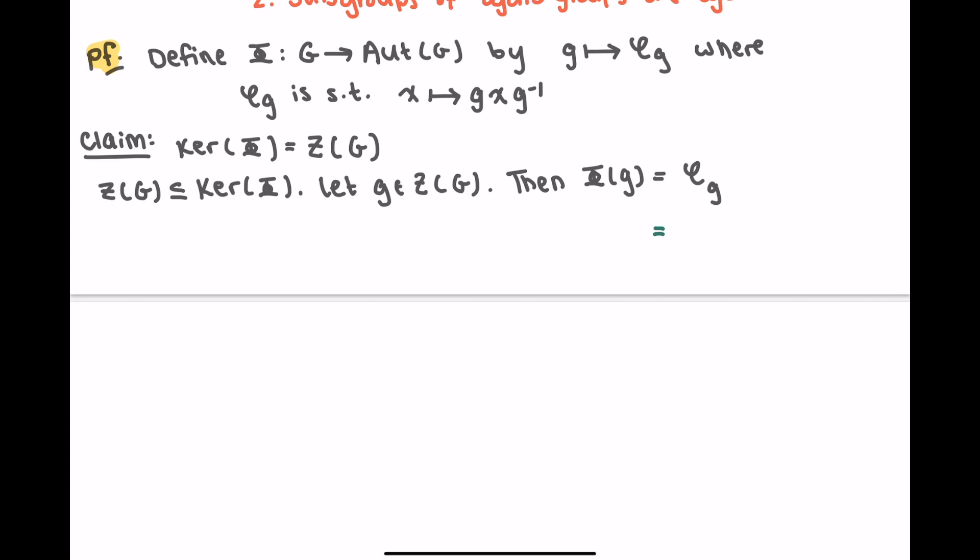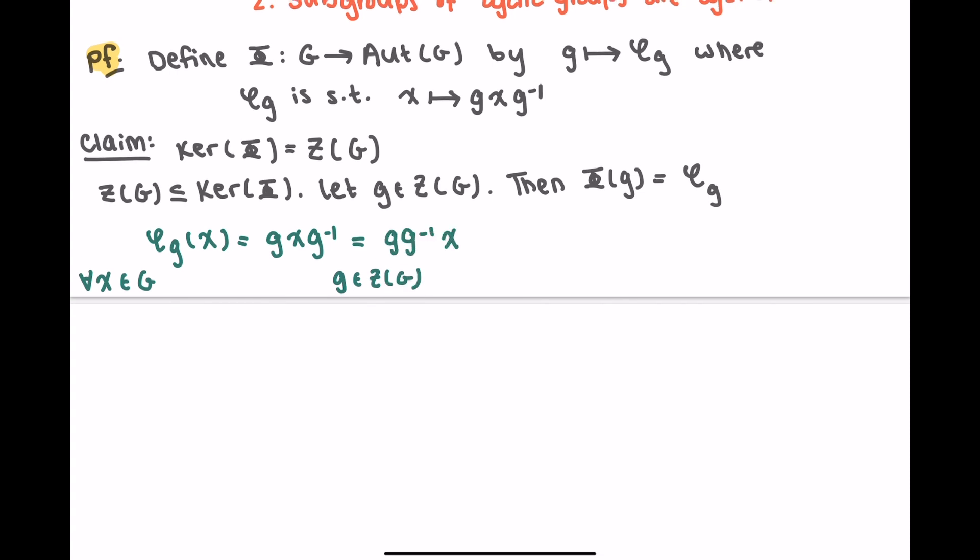Phi of g of x is equal to gxg inverse for all x in G. But because g is central, g in center of G implies that this is gg inverse x, which is just x. So for all x in my group, this function sends x to itself. This means that little phi sub g is the identity, so it's the neutral element in the automorphism group. In particular, it means that g is in the kernel of capital phi. So there's one direction.